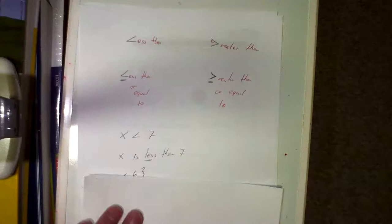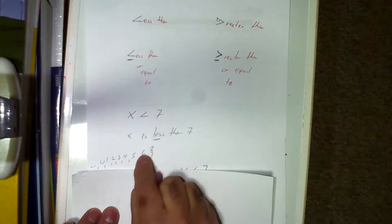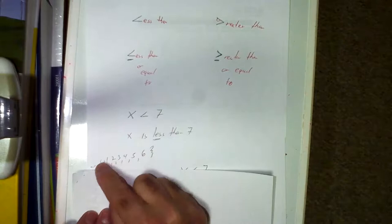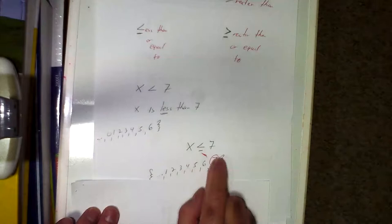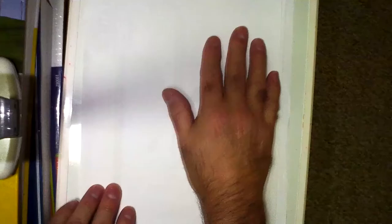Those are the four inequalities used in set notation. If x is less than 7, that means all numbers smaller than 7 — 6, 5, 4, 3, 2, 1, 0, and so on — but you don't include 7. If x is less than or equal to 7, you start at 7 and descend. If it's not underlined, you don't include that number; if it is underlined, you do include it.